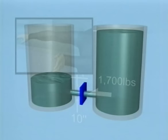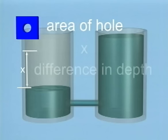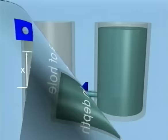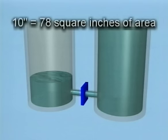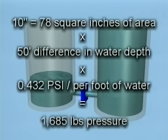The formula for calculating the force of water through a hole at a particular depth is: the area of the hole multiplied by the difference in water depth, multiplied by the PSI per foot of water depth. In the situation just described, the 10-inch hole equals 78 square inches, times 50 feet of water depth, times 0.432 PSI per foot of freshwater depth, equals 1,685 pounds of water pressure.